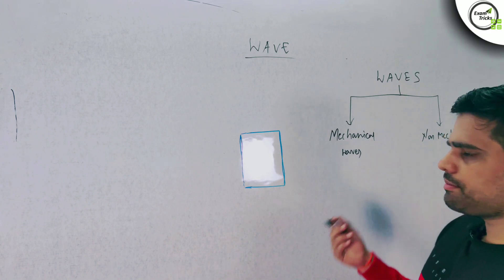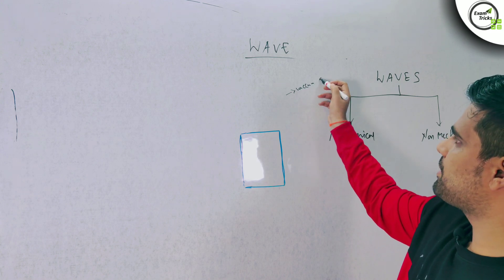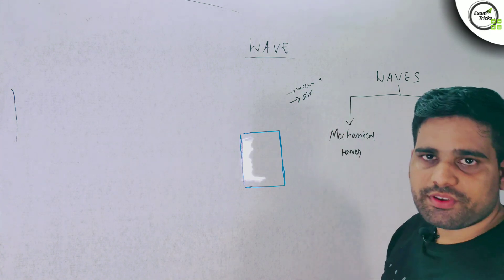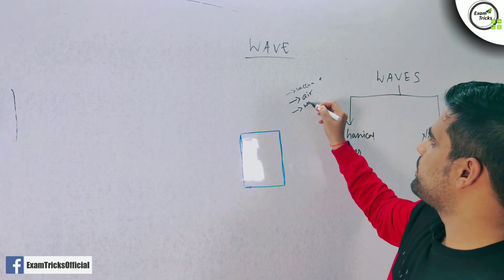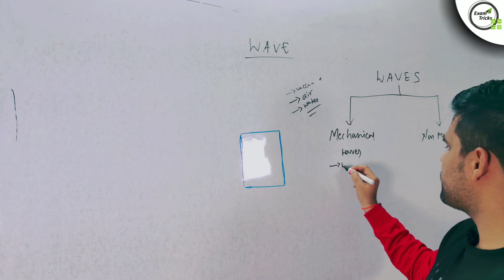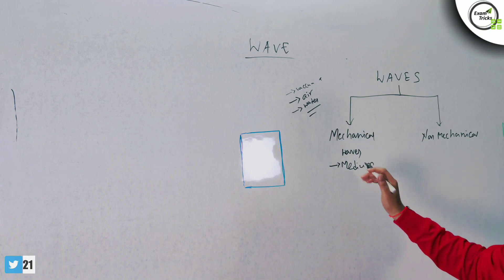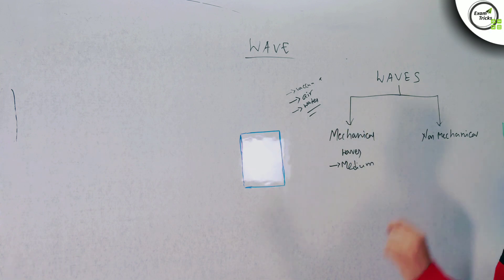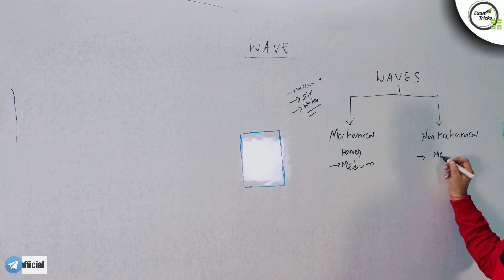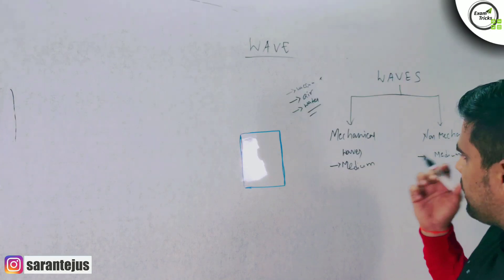Like waves and non-mechanical waves, there are many mediums. Vacuum is a medium. Air or atmosphere is a medium. Water is a type of medium. If a wave needs a medium to travel, we call those mechanical waves. A medium is compulsory for a mechanical wave. For a non-mechanical wave, it does not require a medium.